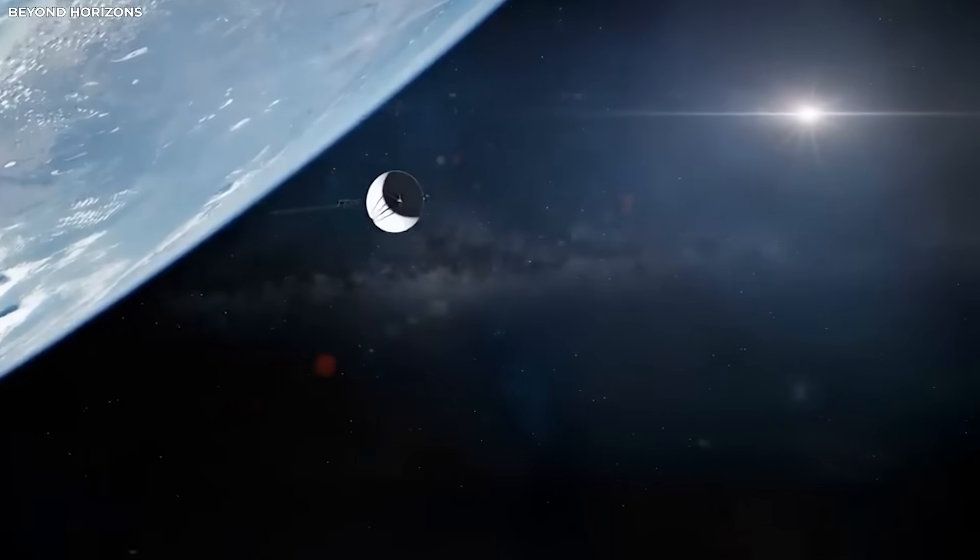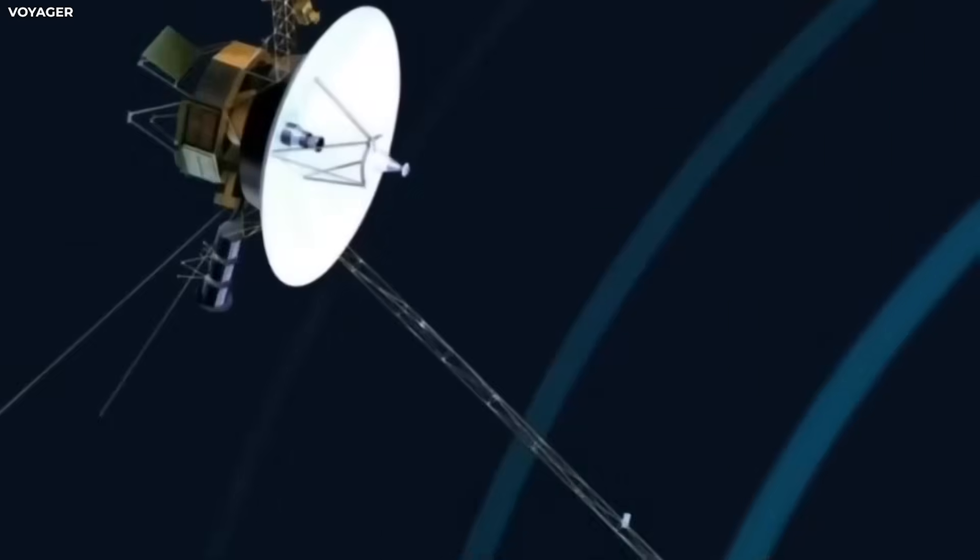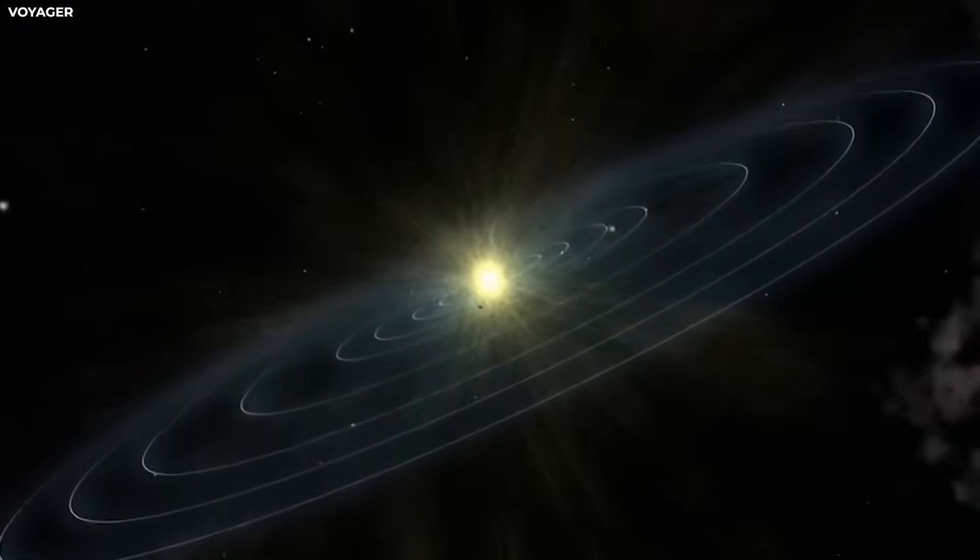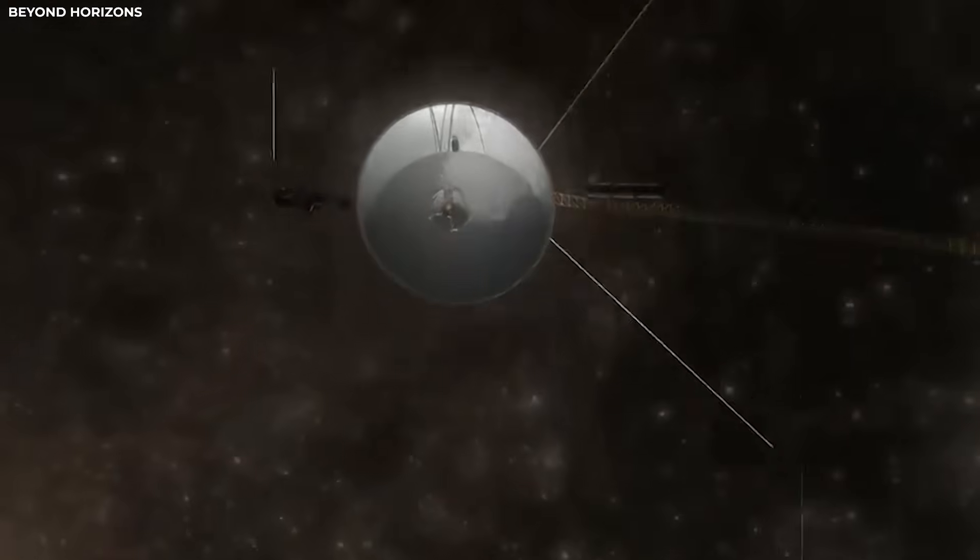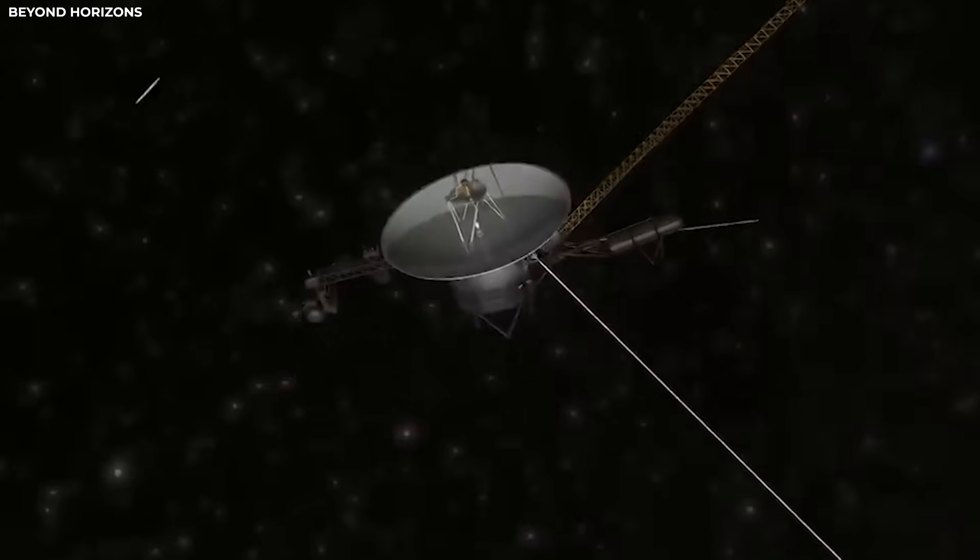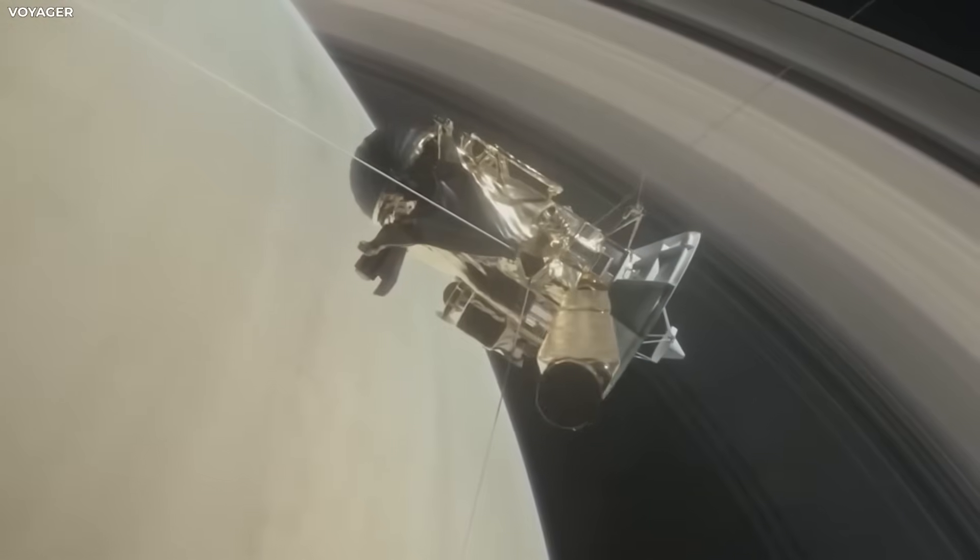Voyager 2 also carries the golden record. That's a message from Earth, music, greetings, and sounds from our planet. If something in space noticed that, they may have chosen to respond. It moves with purpose, carrying more than parts. It carries meaning. A symbol drifting through space.